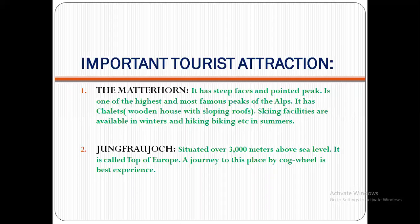Skiing facilities are available in winter. Summer facilities include hiking, climbing, biking, etc. to the nearby mountains. The Matterhorn has steep faces and pointed peaks, is one of the highest and most famous peaks of the Alps, has a chalet — a wooden house with a sloping roof. Skiing is available in winter, and hiking and biking are done during summer.